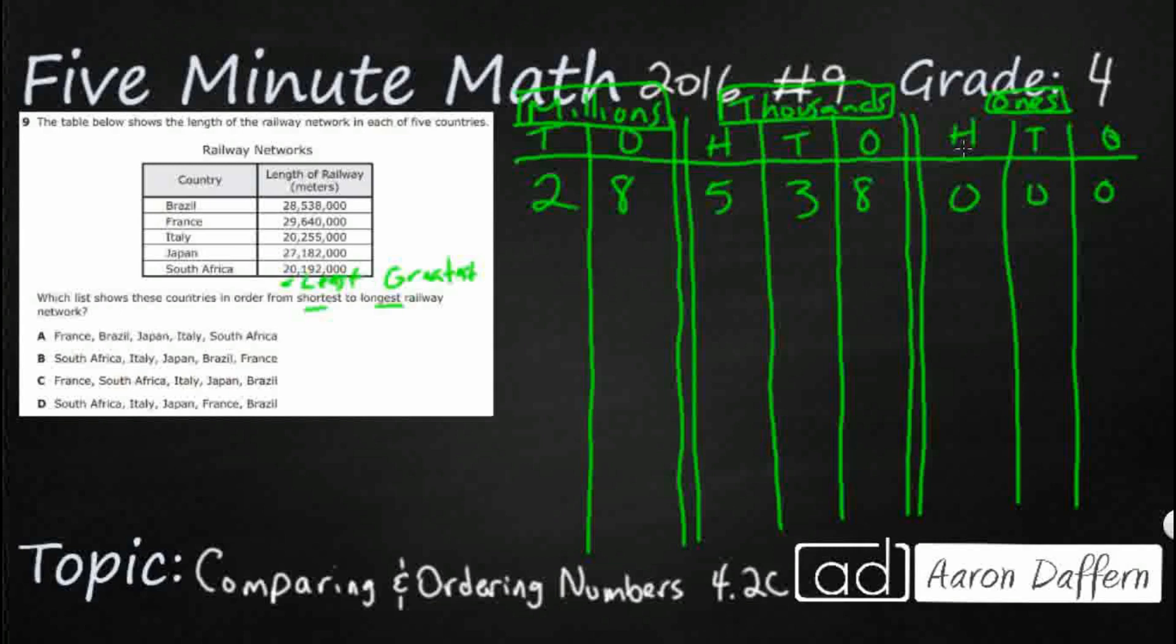So we've got 28 million, 538 thousand, and with this double line will kind of serve as our comma. France, we've got 29 million, 640 thousand. All of them have zeros in the ones period there. So Italy's got, let's say, 20 million, 255 thousand.